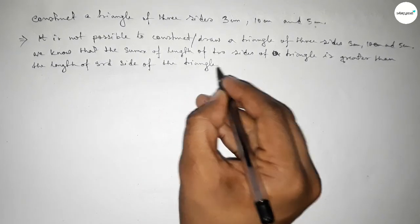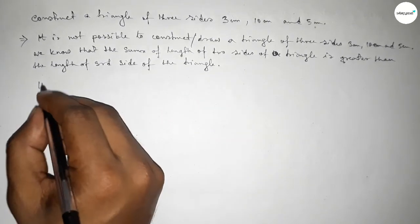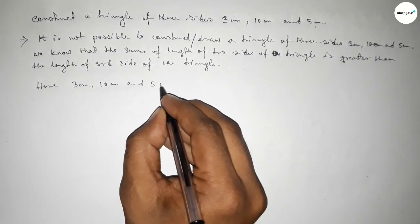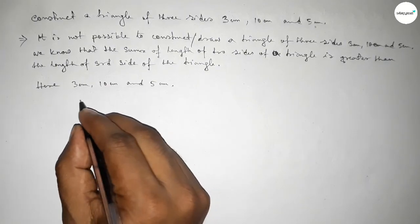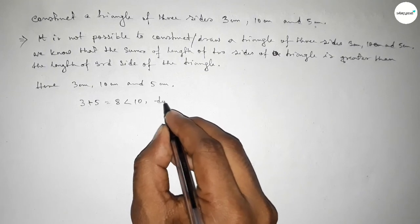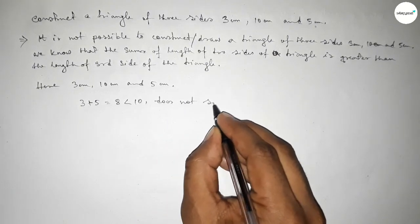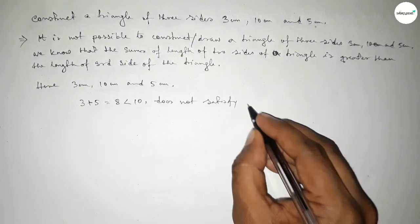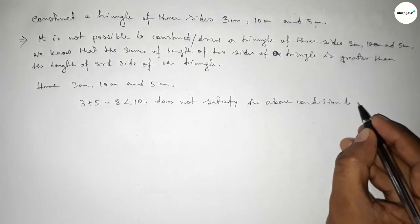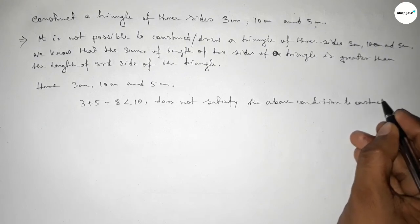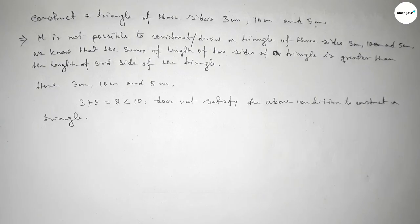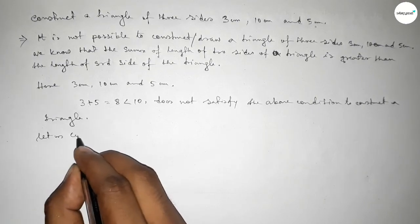With the given sides of 3 centimeter, 10 centimeter, and 5 centimeter, adding 3 plus 5 equals 8, which is less than 10. So it does not satisfy the condition to construct a triangle with these three sides.